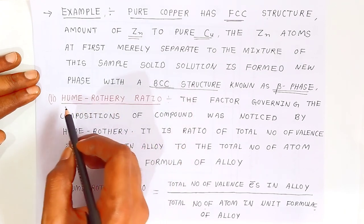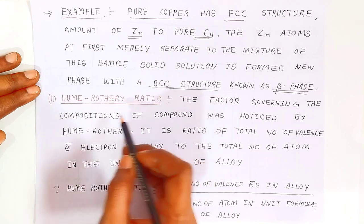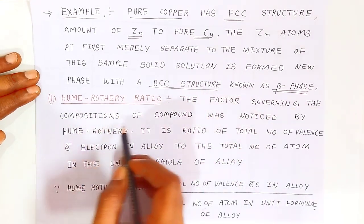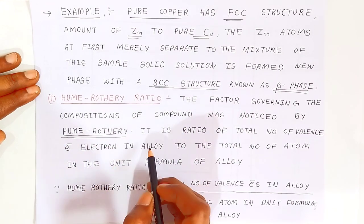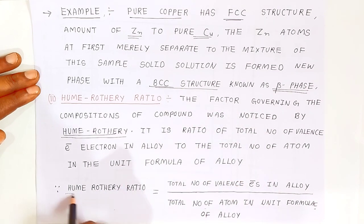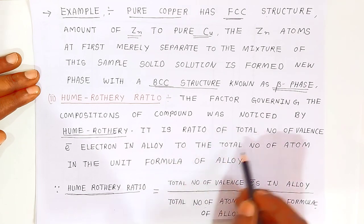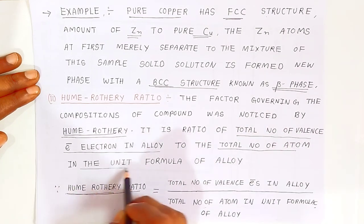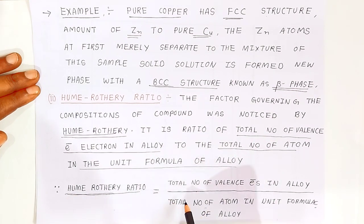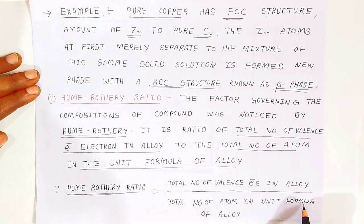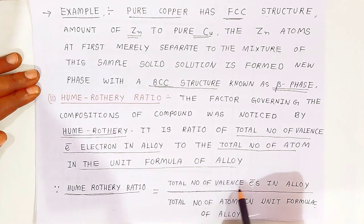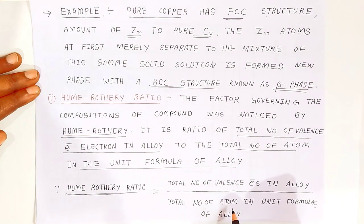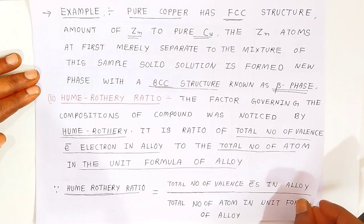The second part is the Hume-Rothery ratio. When the alloy is formed, this ratio is very important. The Hume-Rothery ratio is the ratio of the total number of valence electrons in the alloy to the total number of atoms in the unit formula of the alloy. In the numerator you add the total number of valence electrons, and in the denominator you put the total number of atoms.